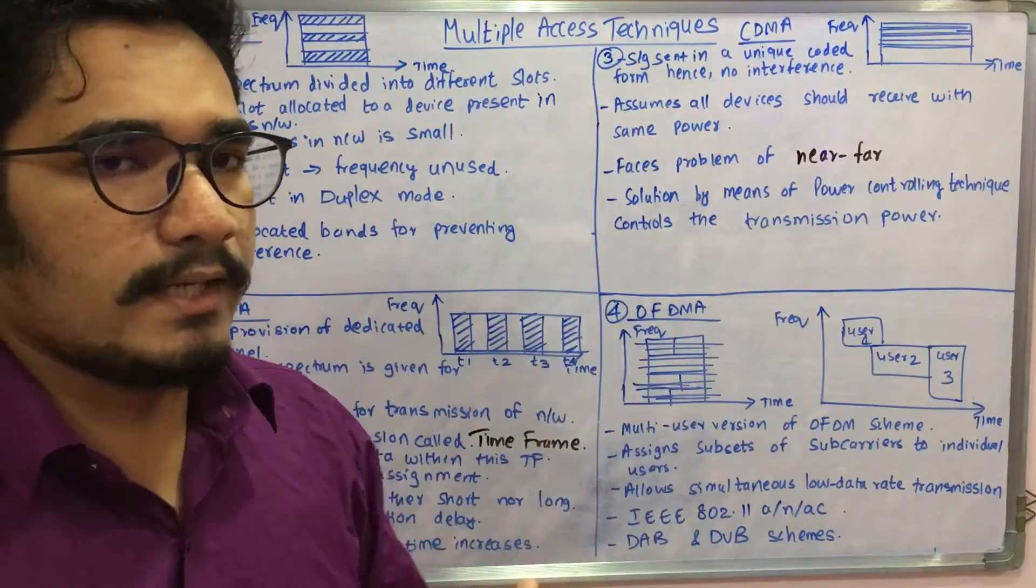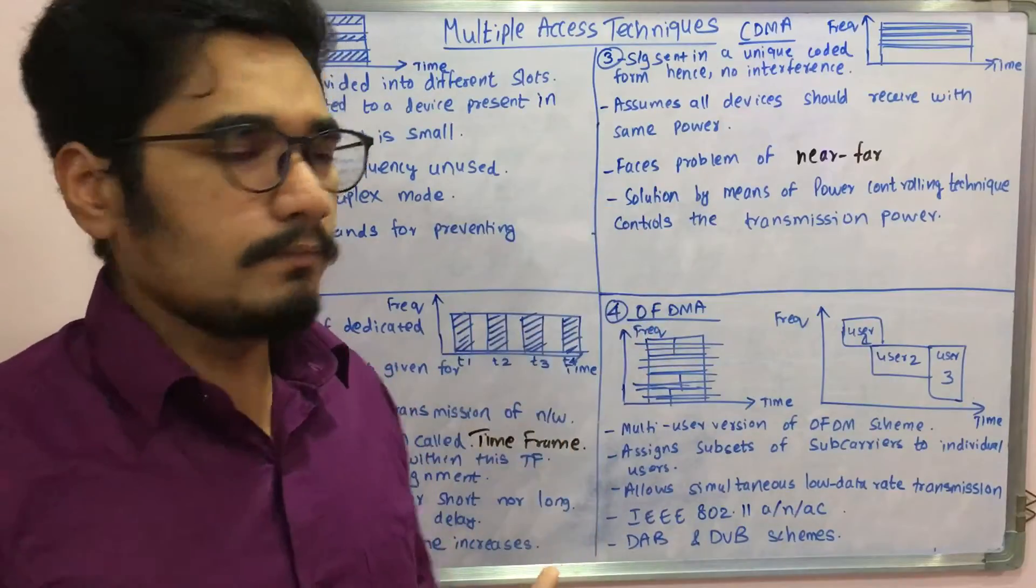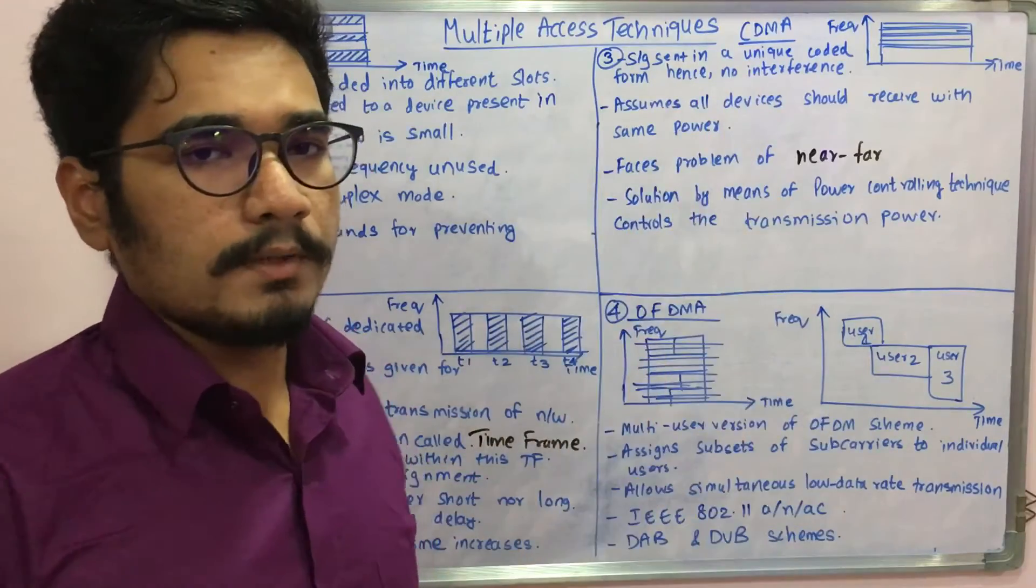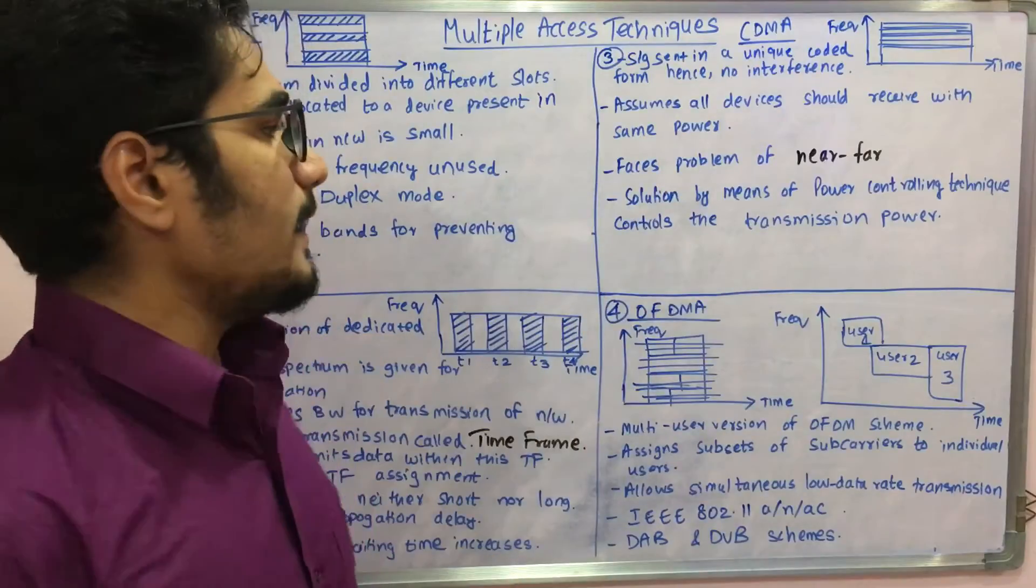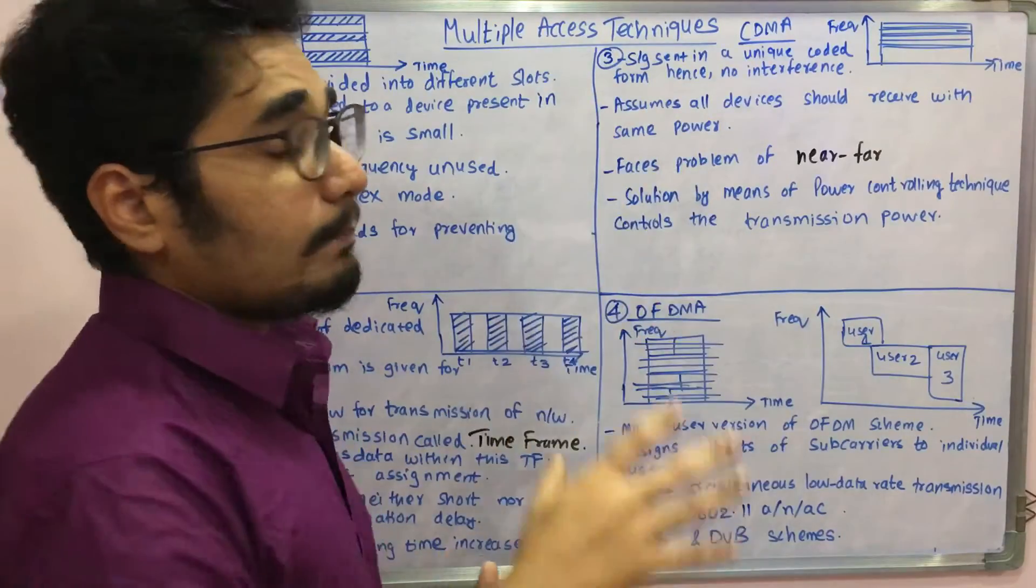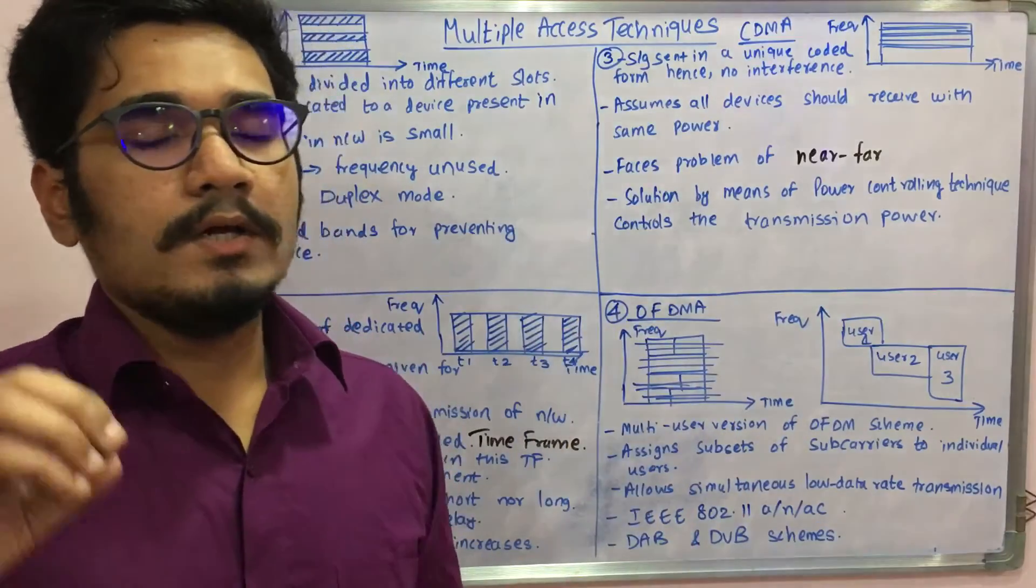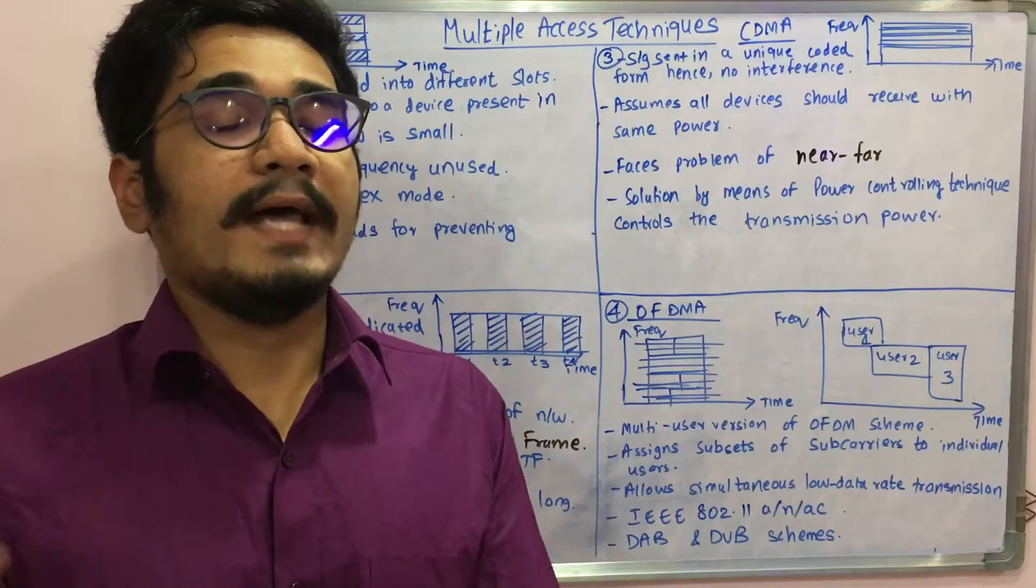That thing is assumed in code division multiple access, but it's not so, and so it faces a major problem which we call the near-far problem, especially for CDMA. This problem can be eliminated by means of the power controlling technique.